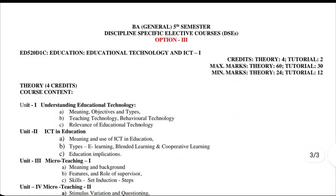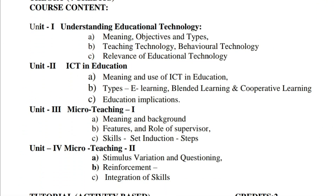The title of Option 3 is Educational Technology and ICT. The code for this is ED520D1C. Course content: Unit 1 is Understanding Educational Technology — A. Meaning, objectives, and types of educational technology; B. Teaching technology and behavioral technology; C. Relevance of educational technology.